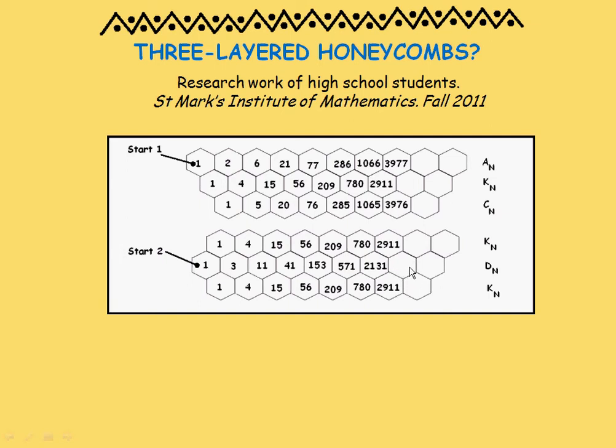I shared some of these results with a whole bunch of high school kids in the fall of 2011. And of course, kids being kids, naturally want to know what happens with three-layered honeycombs. And they started counting paths from starts to ends. Actually, there's two different types of starting points. You have to start on a top or bottom row. And if you count paths, you get various counts that look like this. Or if you start in the middle row, you get counts of paths that look like this.